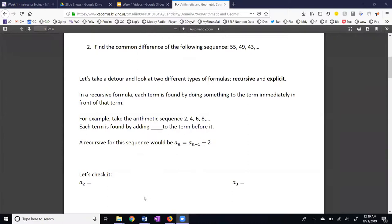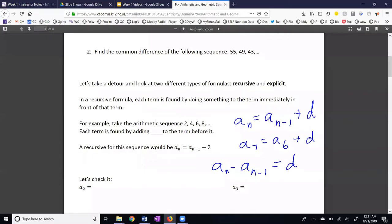Here is the general formula for arithmetic sequences. An is equal to a sub n minus 1 plus d. A sub n minus 1 is the term immediately in front of an. For example, a7 is equal to a6 plus the common difference. If we subtract an minus 1 from both sides, we get An minus a sub n minus 1 is equal to d. This is how we can calculate the common difference.